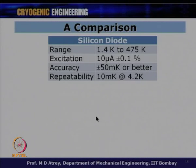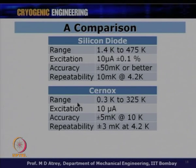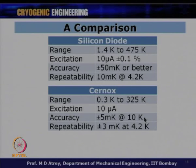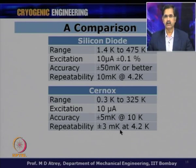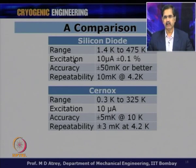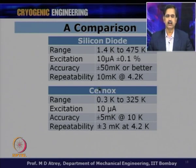Comparing silicon diode and Cernox: silicon diode operates from 1.4 K to 475 K; Cernox from 0.3 K to 325 K. Both use 10 microamp excitation. Silicon diode accuracy is ±50 milli-Kelvin; Cernox is ±5 milli-Kelvin at 10 K. Repeatability is ±3 milli-Kelvin for Cernox and ±10 milli-Kelvin at 4.2 K for silicon diode. These are comparative representative values from various references.